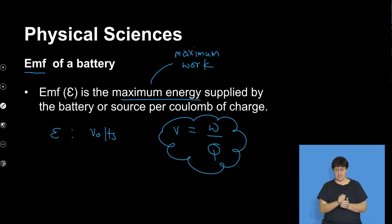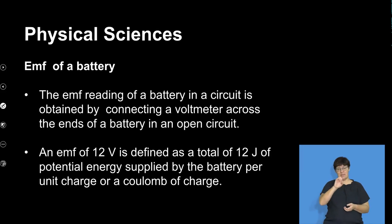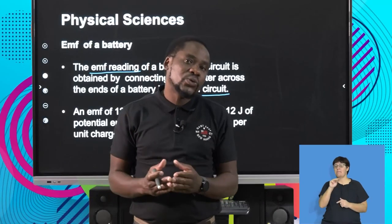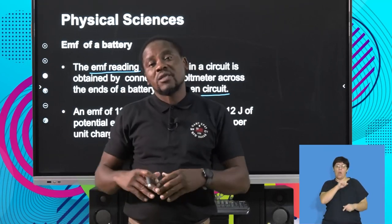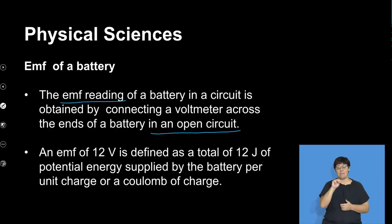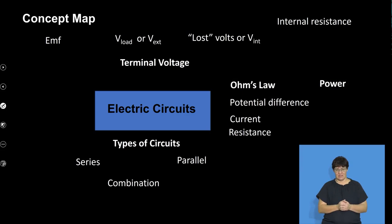When do we obtain the EMF reading? When there is no current in the circuit, we are able to get the maximum energy that the battery can supply. The EMF reading of a battery in a circuit is obtained by connecting a voltmeter across the ends of a battery in an open circuit. How we obtain the EMF reading has a lot to do with the open circuit — that's when we can get the maximum reading of voltage across the battery. So an EMF of 12 volts is defined as a total of 12 joules, which is the maximum potential energy supplied by the battery per coulomb of charge.